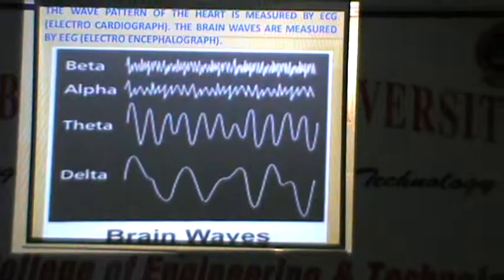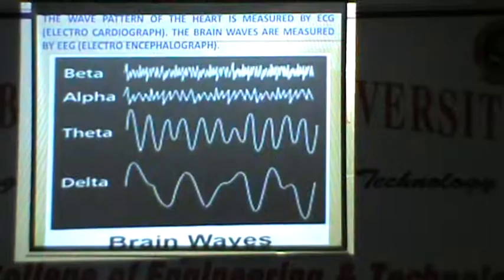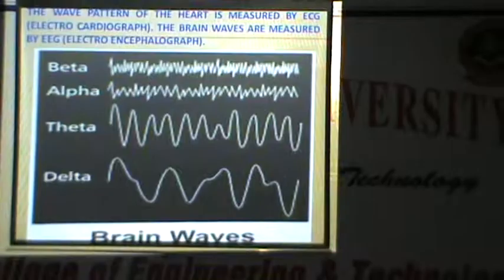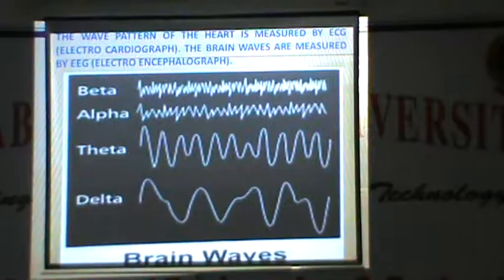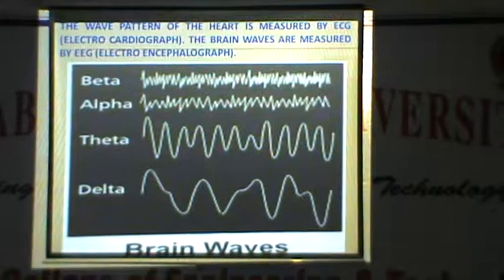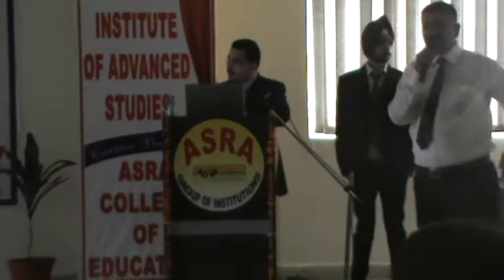How the wave pattern of the heart is measured by ECG — electrocardiography — and the brain waves are measured by EEG — electroencephalography. These are the patterns. At Beta level, see the heavy frequency there; then Alpha — the frequency reduces; Theta — it reduces more; and at Delta level it is minimum. That is what we can get by practicing these types of drills.